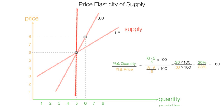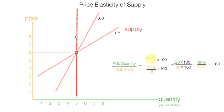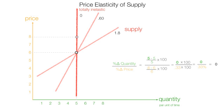What happens if supply is perfectly inelastic — straight up and down like this? The percentage change in quantity becomes 5 minus 5, divided by 5, or 0, times 100, which is a 0% increase in quantity. While the percent change in price is exactly the same, price elasticity of supply equals 0. So if supply is perfectly or totally inelastic, price elasticity of supply is 0.